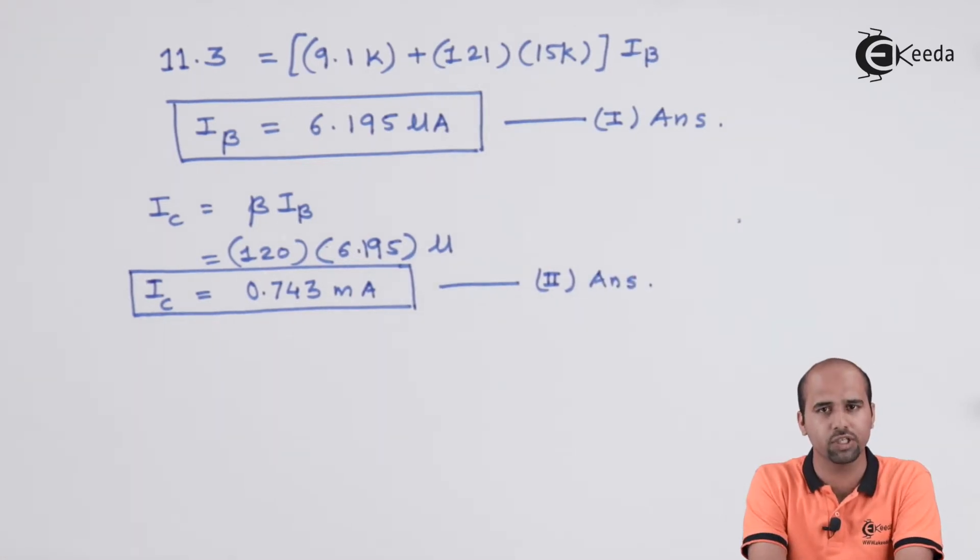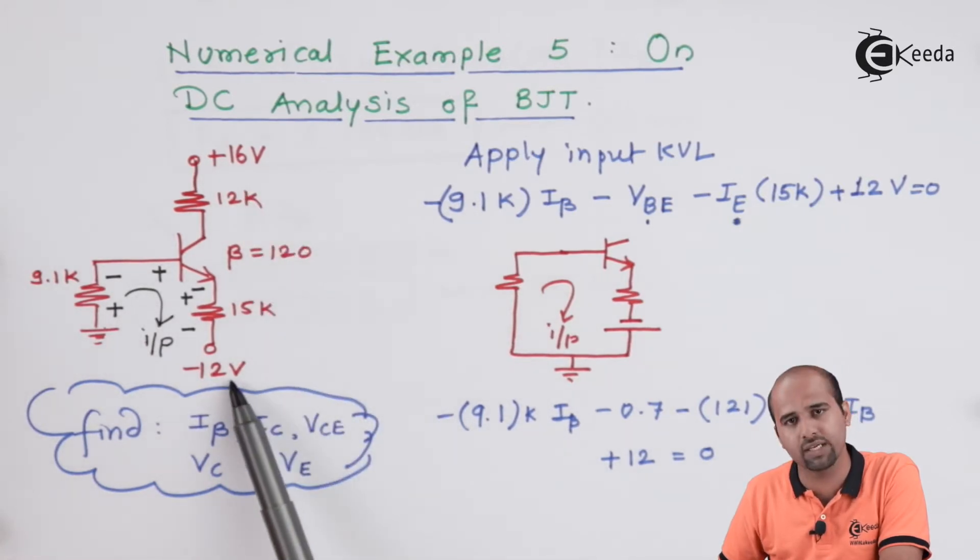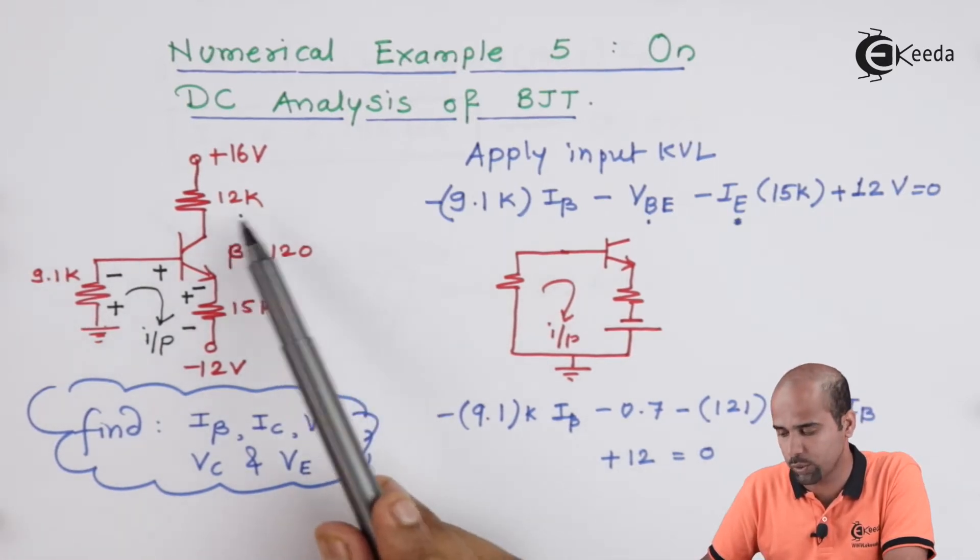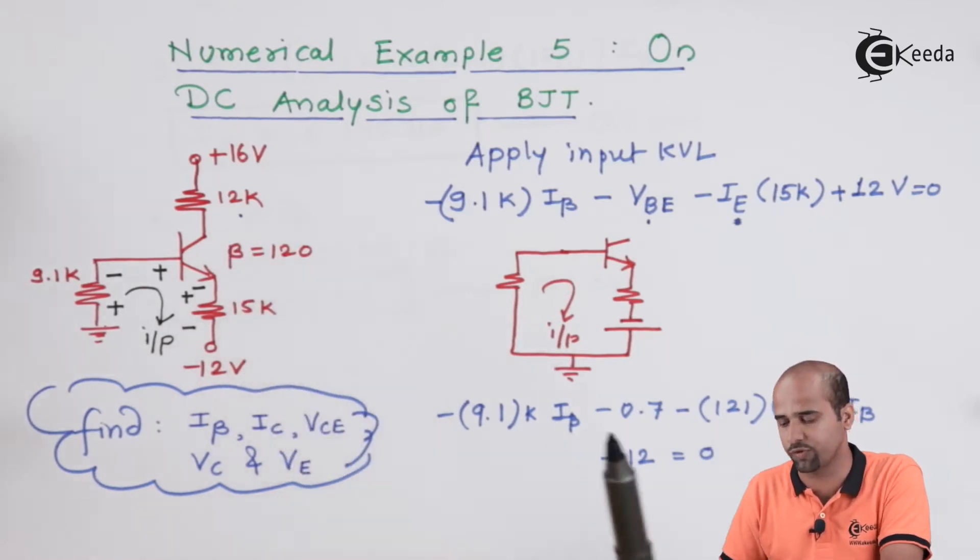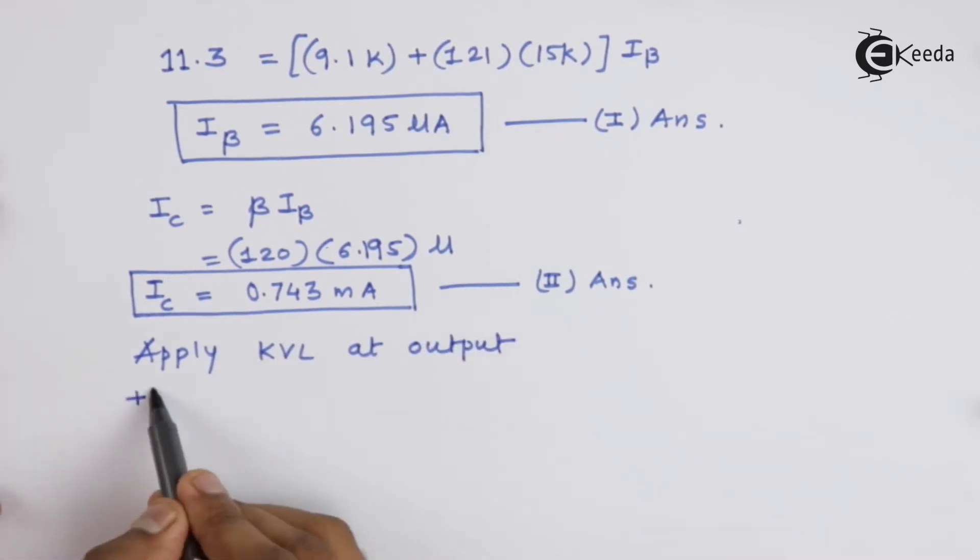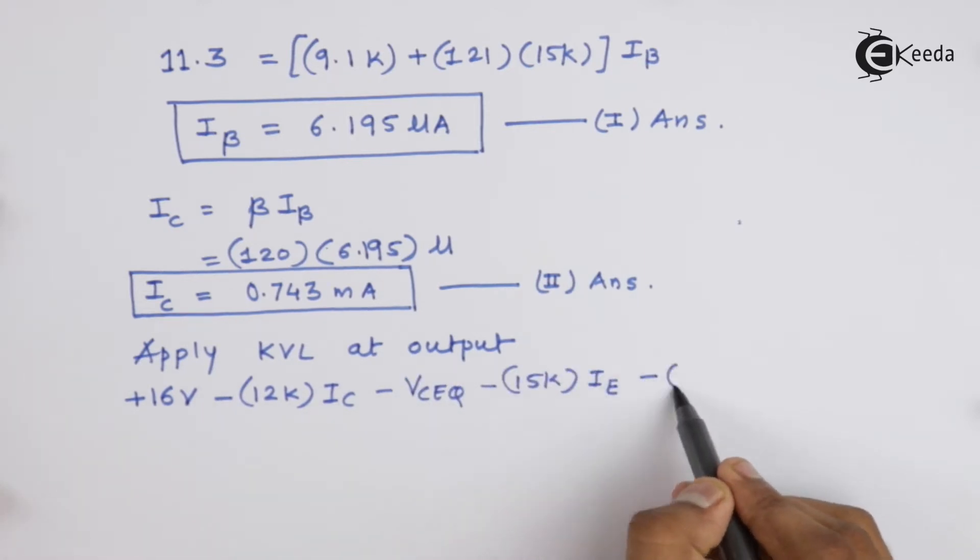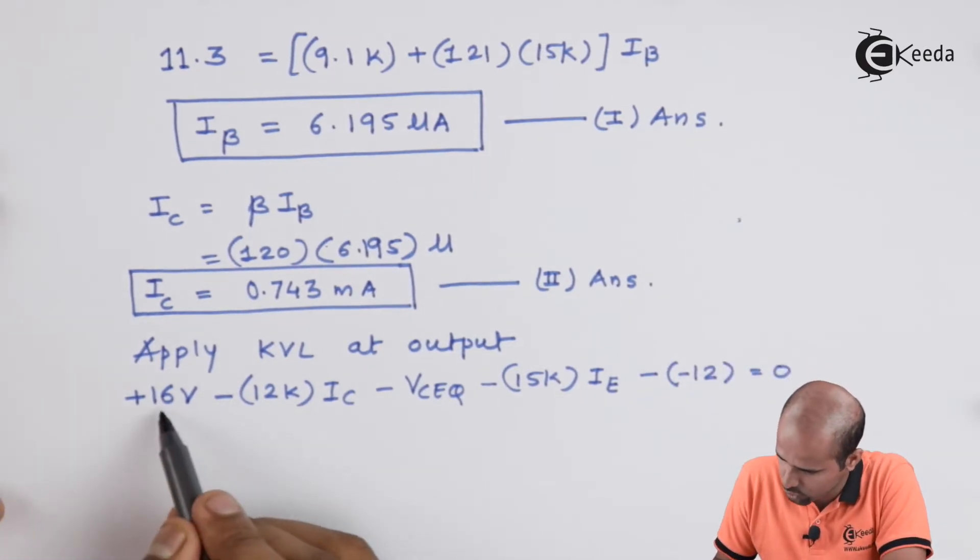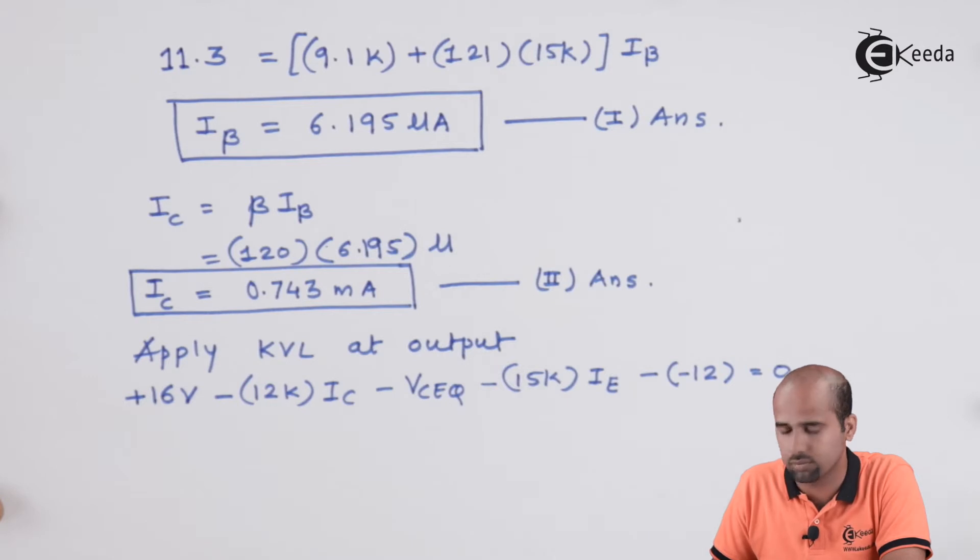Now, we can proceed further for calculation of value of VCE with output KVL. Mind well guys. In the output KVL, we will start from plus 16V and we will end up to minus 12V. So, in between we will be getting 12K multiplied by IC, 15K multiplied by IC and your VCE. That we are expecting to find out. So, 16 plus 12 will become 28 and rest all the parameters will keep on the right hand side. Except these two terms because IC value is known to us. I will keep the value of IE and IC same.